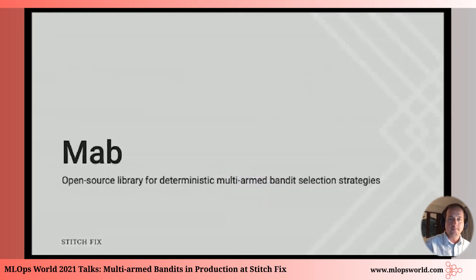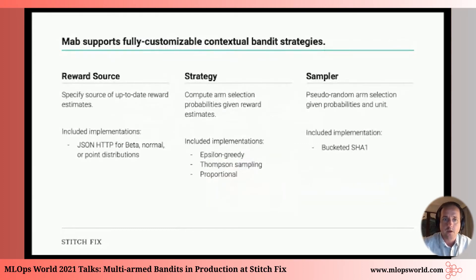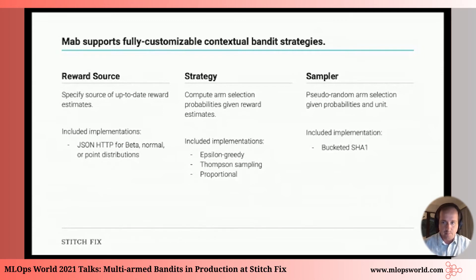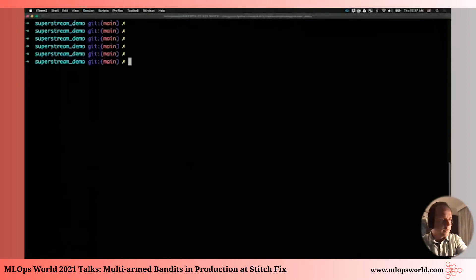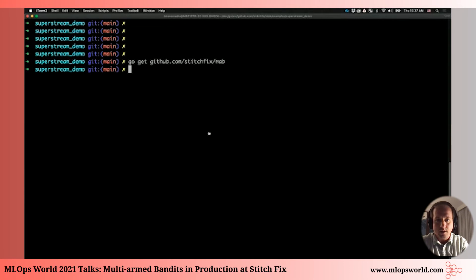Now let's talk about MAB, the open source library for selection strategies. This is used inside our randomization service. When it's an A/B test we use existing software; when it's a multi-armed bandit we use this library. A bandit in MAB has three parts: a reward source — wherever your up-to-date reward estimates come from; a strategy — we have four or five implemented strategies; and a sampler — we use a bucketed SHA-1 hash. Installation is easy: go get github.com/stitchfix/mab.